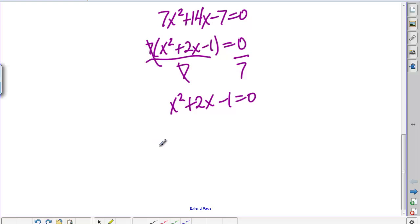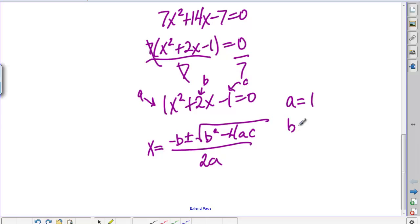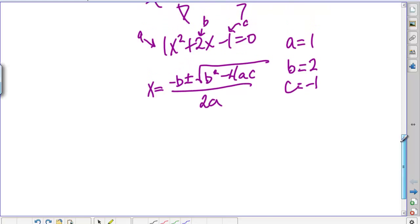So we could say the quadratic formula looks like this, where a, b, and c come from these numbers right here. This is a, this is b, and this is c. So a is 1, b is positive 2, and c is negative 1.